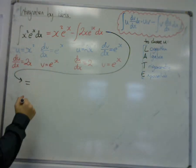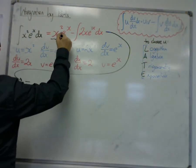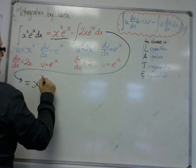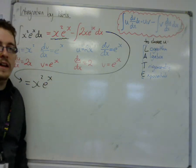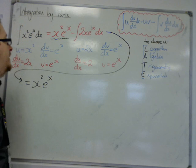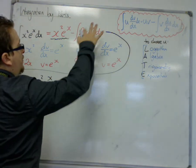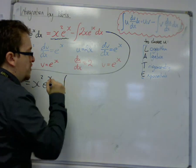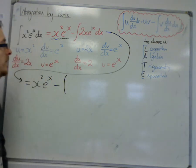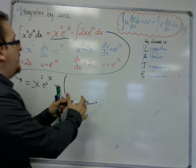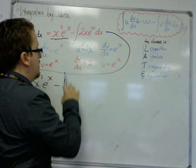Now, so, we have, first of all, this first term, x squared e to the x. Nothing is going to happen to that now, that can just stay as it is. Then we have the integral, take away the integral of 2x e to the x. So I suggest opening up a big bracket here, because we are going to insert all of this into the bracket.